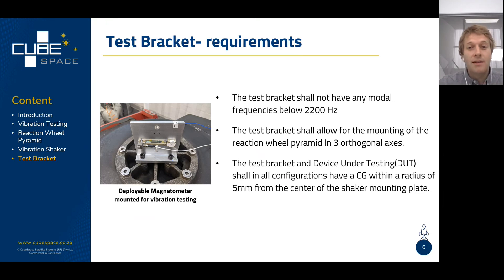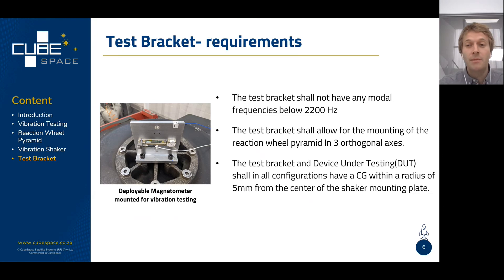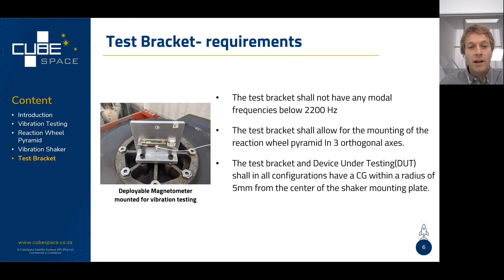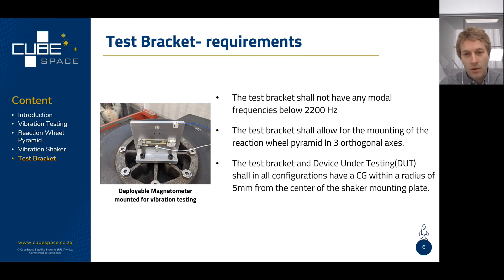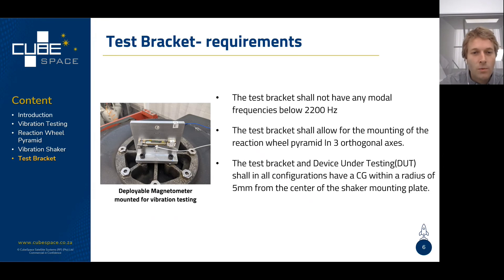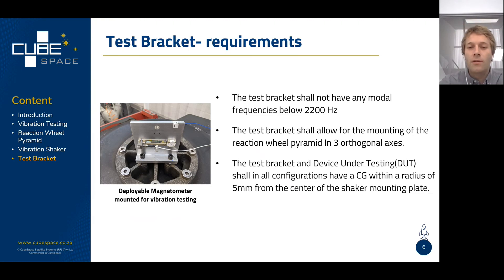The second requirement is that the test bracket needs to allow mounting of the reaction wheel pyramid in three orthogonal axes — three different ways of mounting it. Lastly, to avoid overstressing the vibration shaker, we need to ensure the center of gravity of the vibration bracket and the device under test, the reaction wheel pyramid, is as close as possible to the center of the shaker coil. As a safe estimate, we say within a radius of no bigger than five millimeters.